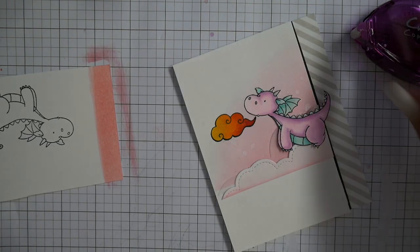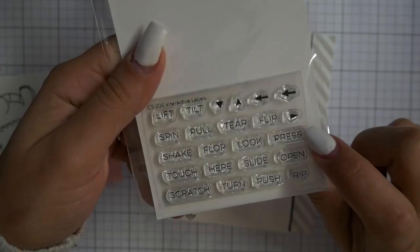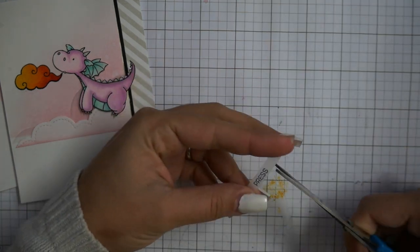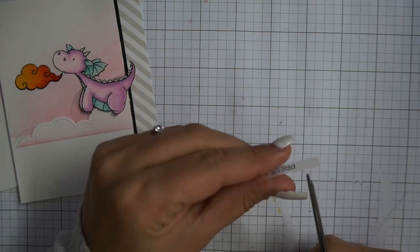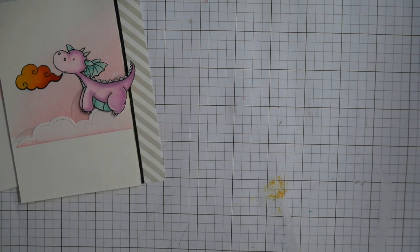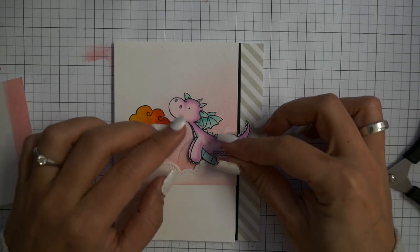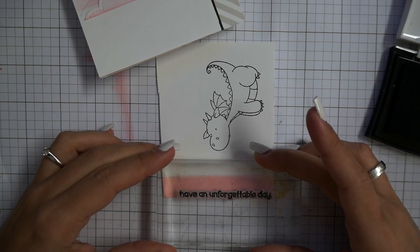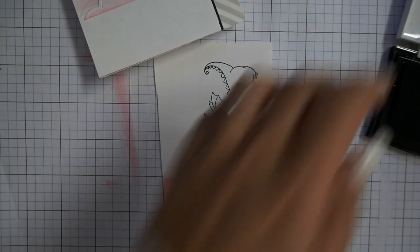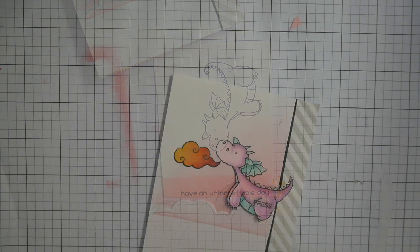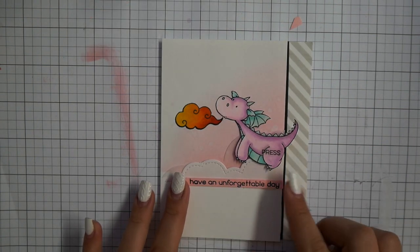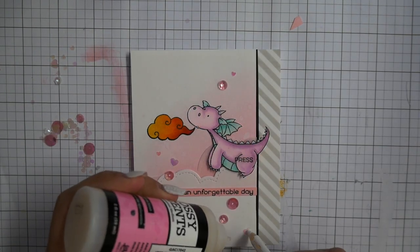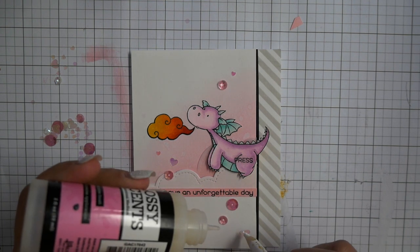Now I use my Tombow Mono Multi glue to glue down the fire. I'm using the My Favorite Things interactive label, I think it's called, to stamp a little 'press' on some vellum. I'm taping it to the dragon. The sentiment is from Lawn Fawn because the ones from My Favorite Things I found were too big sometimes for my little strip. I taped it down now.